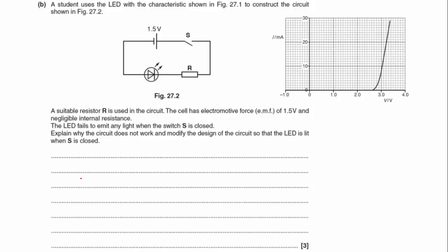Okay, now if we move on to B. A student uses the LED with the characteristics shown in figure 27.1 to construct the circuit shown here. A suitable resistor R is used in the circuit. The cell has an EMF of one and a half volts and negligible internal resistance. The LED fails to emit any light when the switch S is closed. Explain why the circuit does not work and modify the design of the circuit so that the LED is lit when switch S is closed.